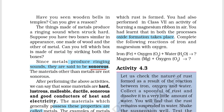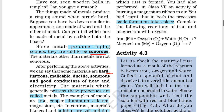After discussing all these things, we conclude that any metal has properties: it is hard, it is lustrous, malleable, ductile, sonorous, and some other properties. Metal is always a good conductor of heat and electricity. Examples of metals include iron, copper, aluminum, and calcium.